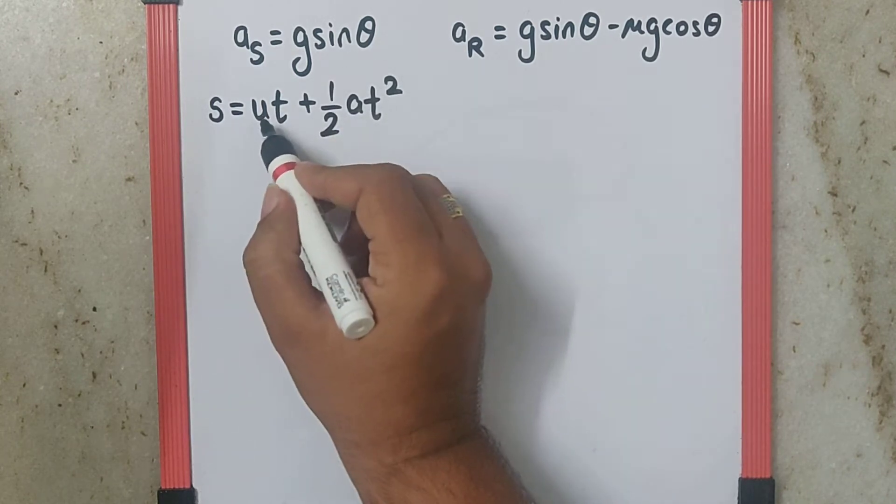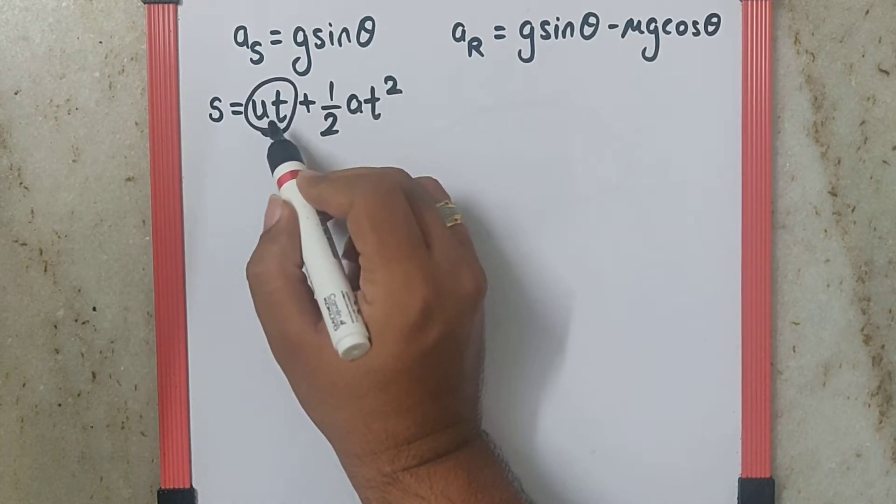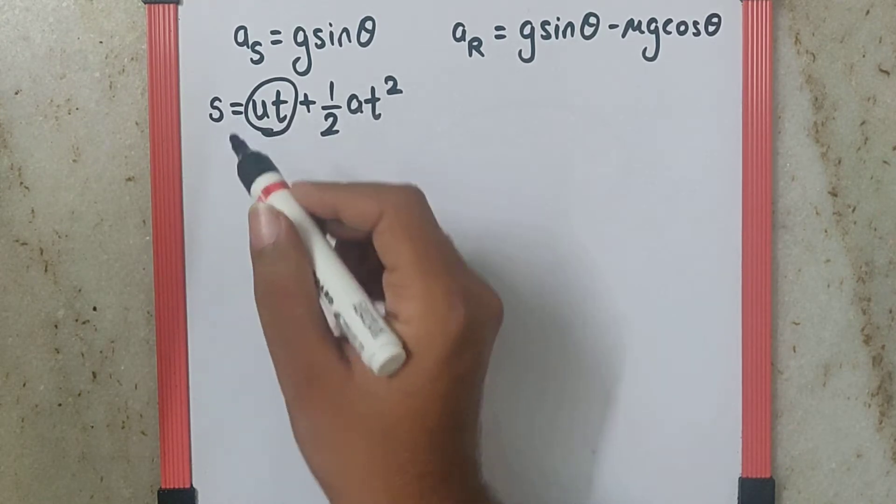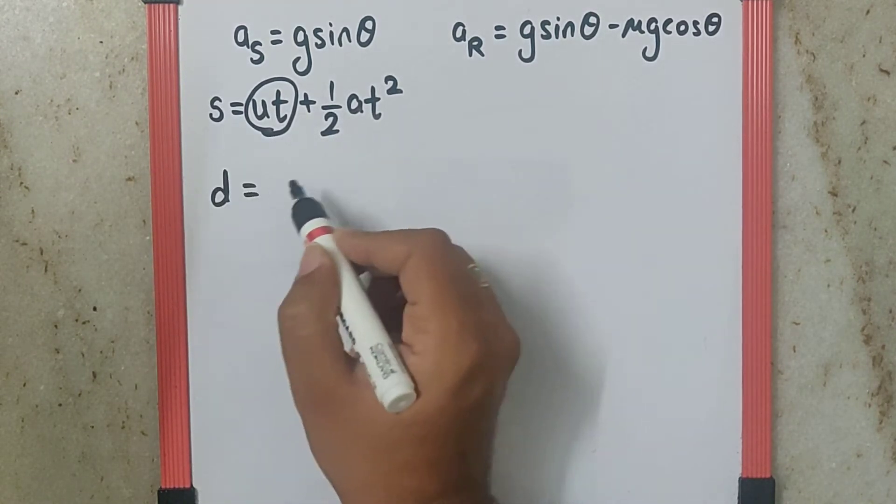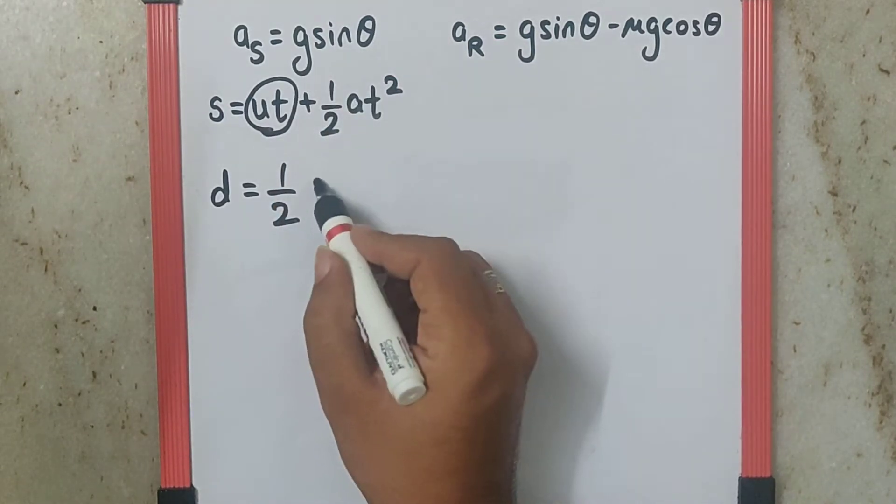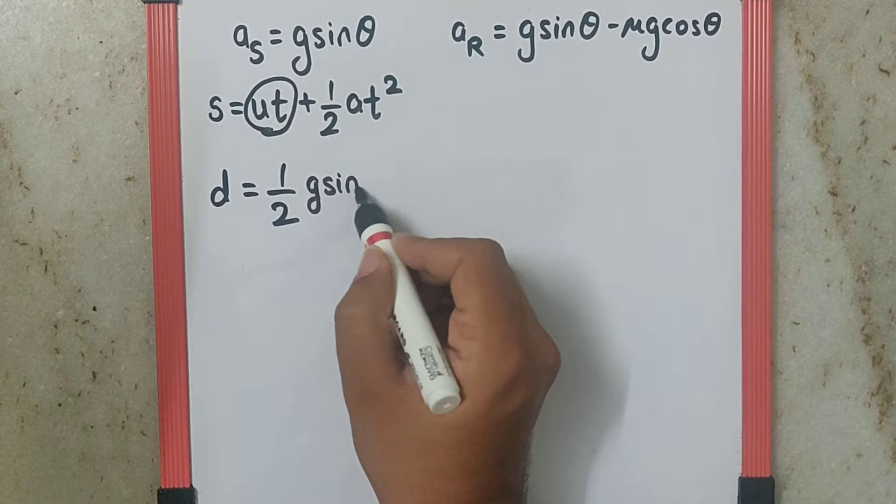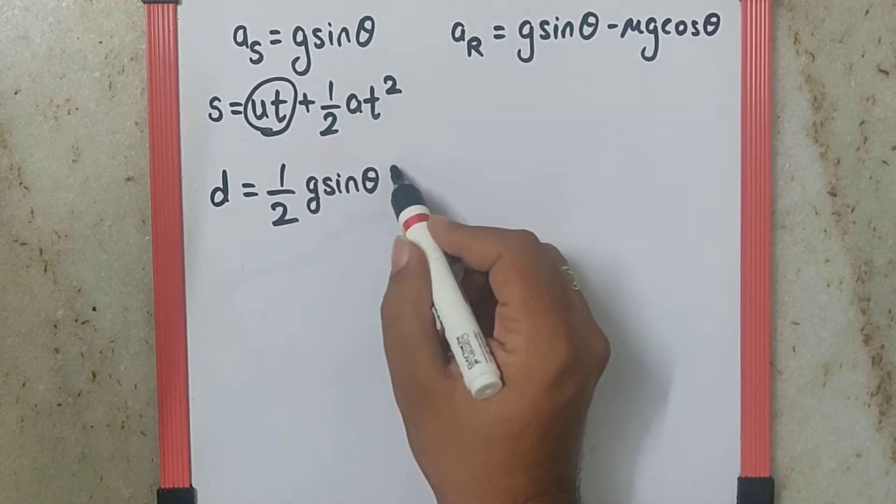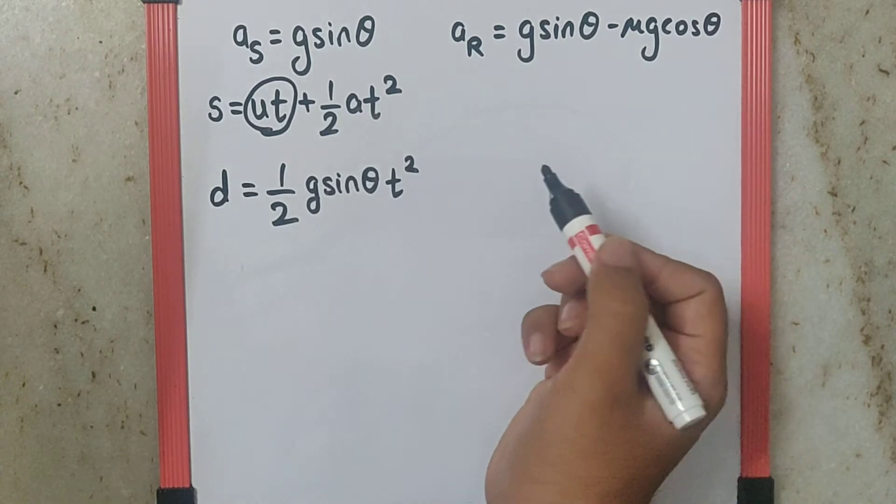We can say this part is going to be zero because the body will start from rest and we can assume the distance to be d. So half into a can be written as g sin theta, and t for the smooth surface itself is t, so we can write it as t squared. So we get d is equal to half g sin theta t squared.